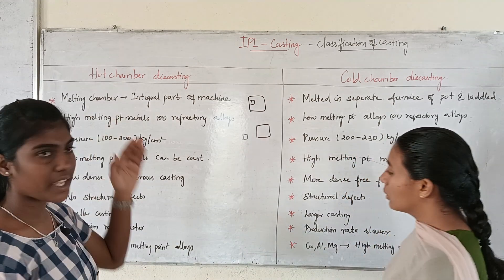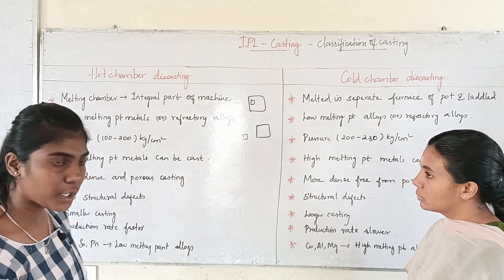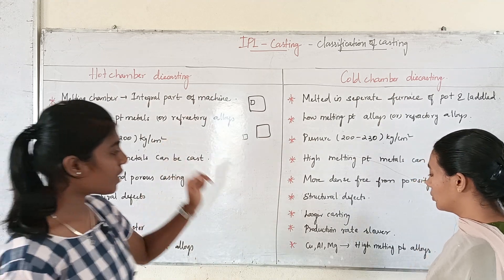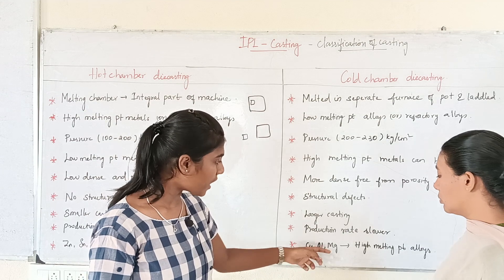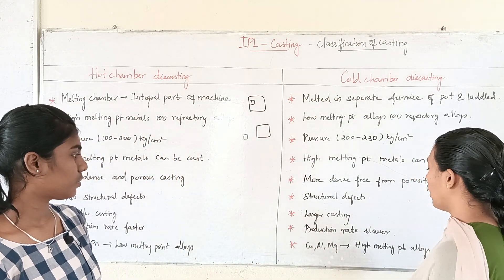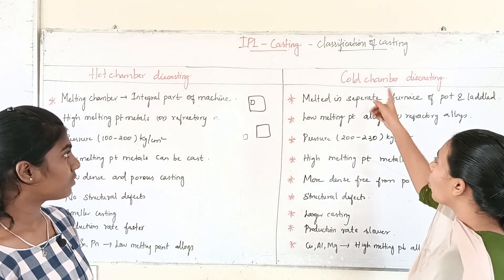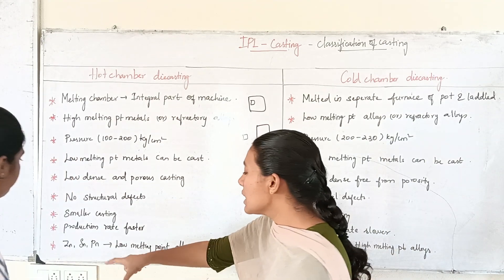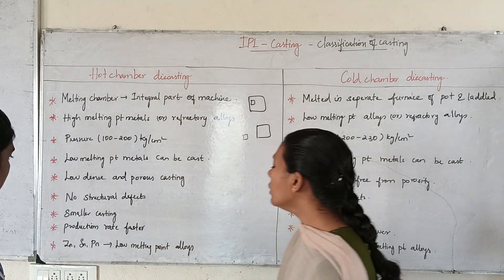For low melting point metals, you can use zinc and lead. For high melting point metals, examples include copper and aluminum. So hot chamber uses low melting point metals, and cold chamber uses high melting point metals. Thank you.